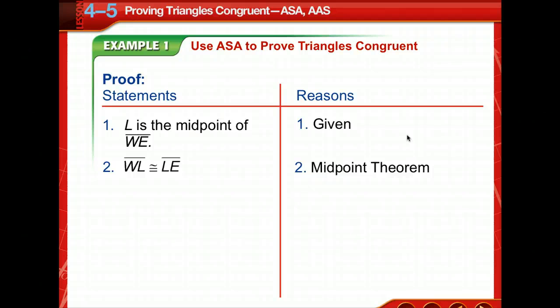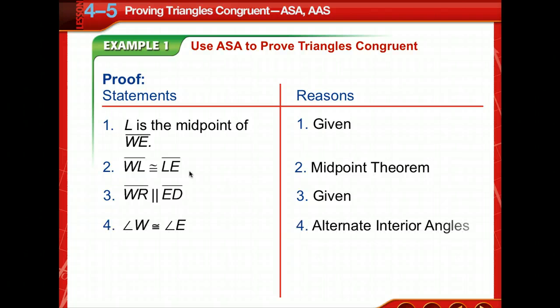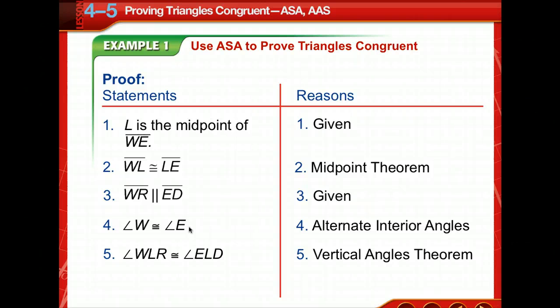Our given: by the midpoint theorem, we can say that WL is congruent to LE. We're given that those two lines are parallel, so by alternate interior angles, angle W is congruent to angle E. Do you see that on your picture? By the vertical angles theorem, angle WLR is congruent to angle ELD. So by angle-side-angle, we can list our congruent statement that these two triangles are congruent.